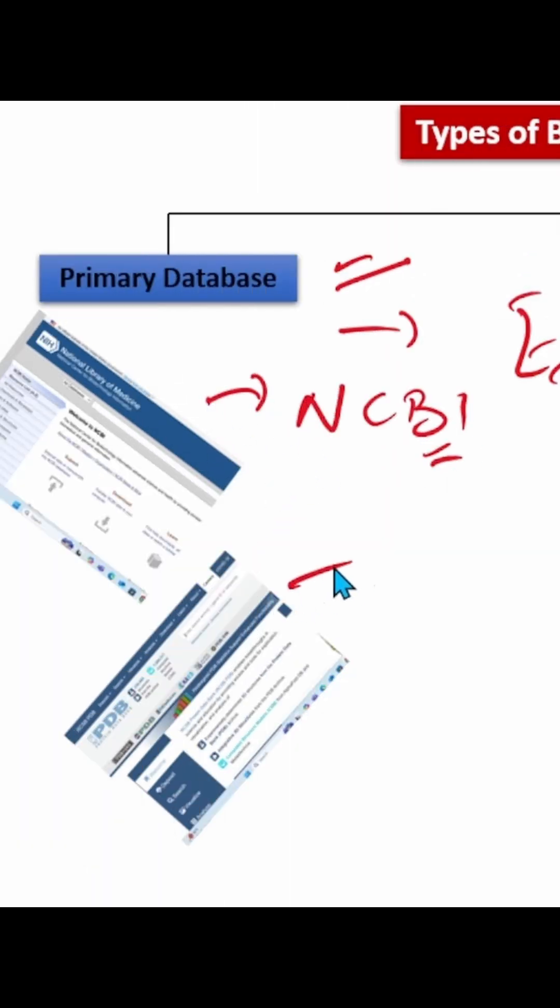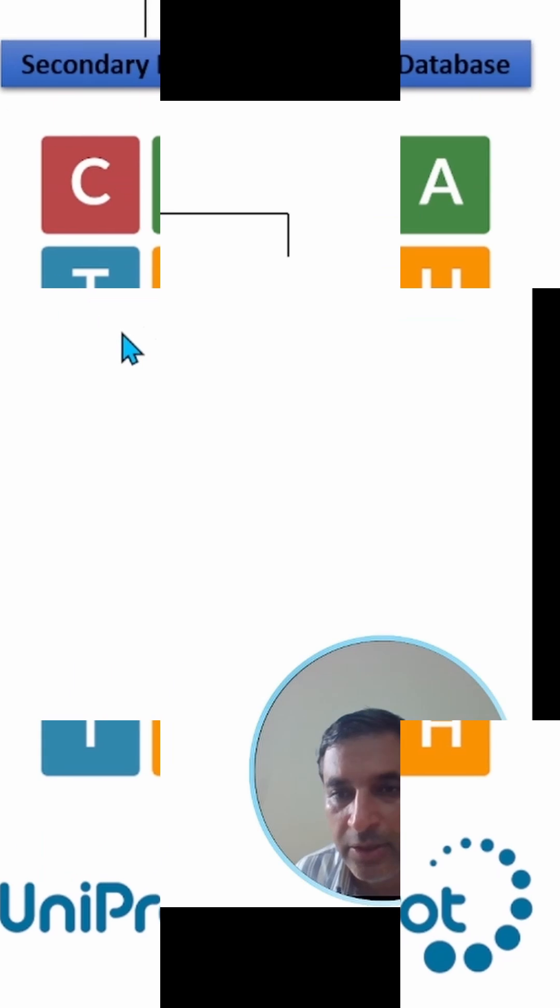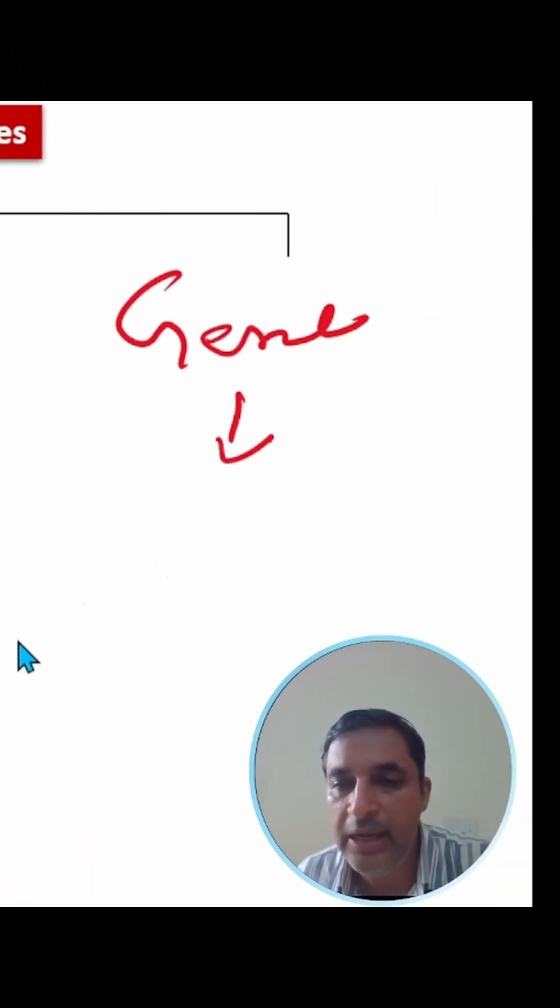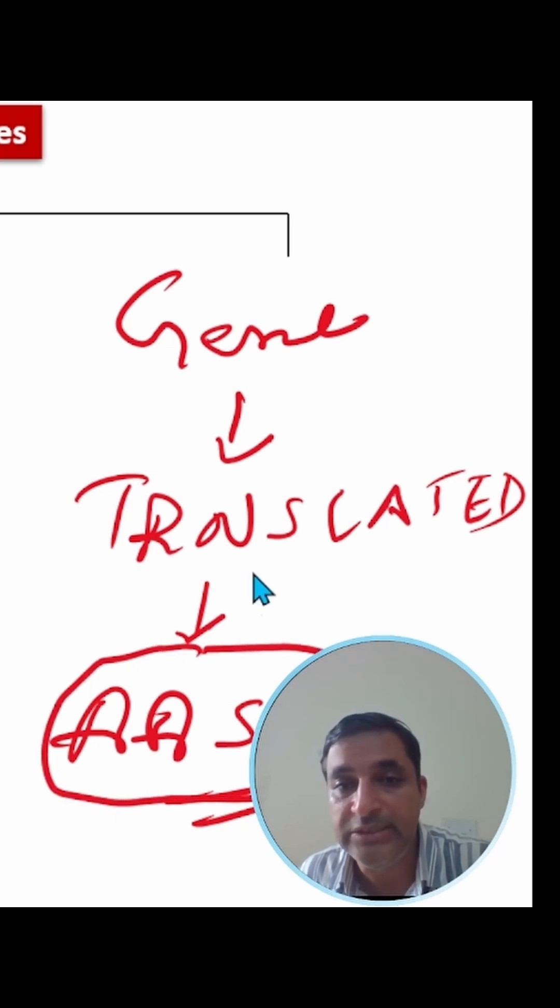Secondary databases contain information which is derived from a primary database. For example, gene sequences are translated to form amino acid sequences. This translated amino acid sequence forms a secondary database.